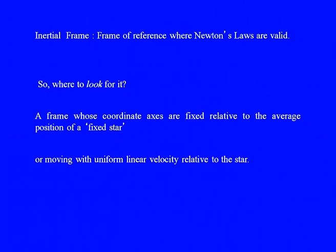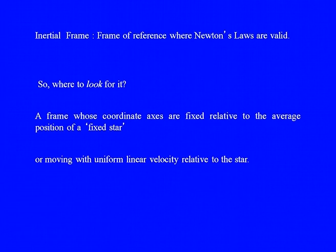We need to be a little bit more precise than this idealistic definition. We can say that it's a frame whose coordinate axes are fixed relative to the average position of a fixed star in space, or a frame moving with uniform linear velocity — that is constant velocity — relative to the star, with no acceleration of the star.